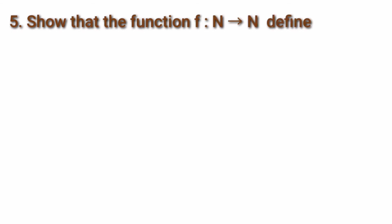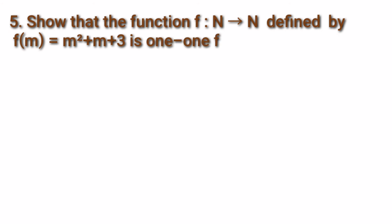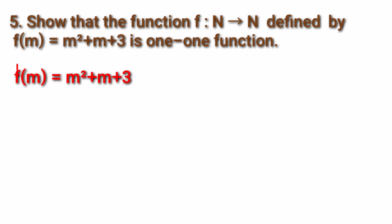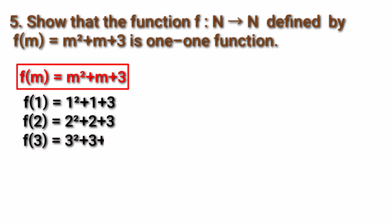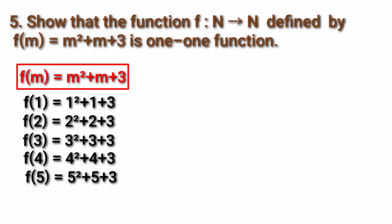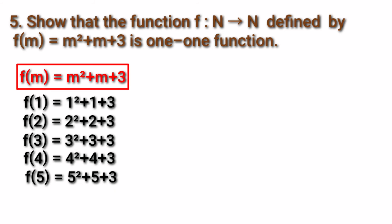Fifth sum: Show that the function f from ℕ to ℕ defined by f(m) = m² + m + 3 is a one-one function. The formula is f(m) = m² + m + 3. Since the domain is ℕ, we substitute values starting from 1: f(1) = 1² + 1 + 3, f(2) = 2² + 2 + 3, f(3) = 3² + 3 + 3, f(4) = 4² + 4 + 3, f(5) = 5² + 5 + 3. Be careful — the last term is always +3, not the value of m.